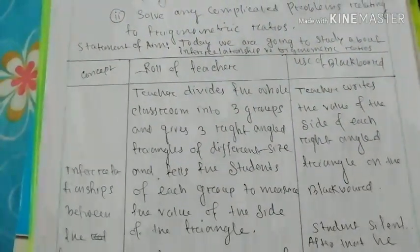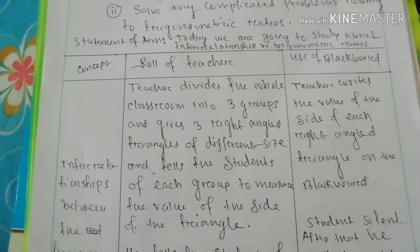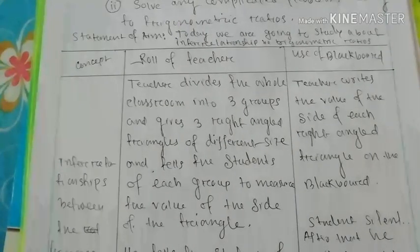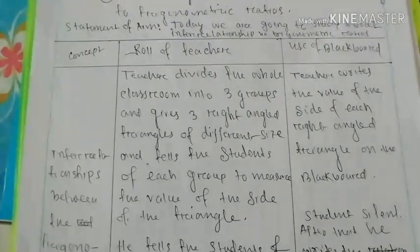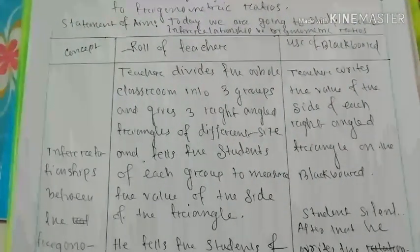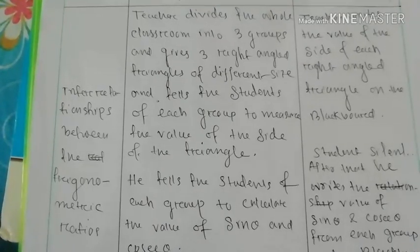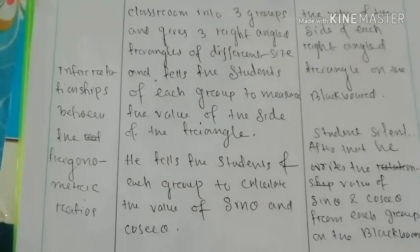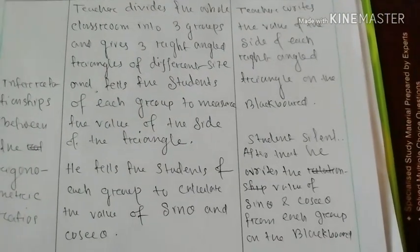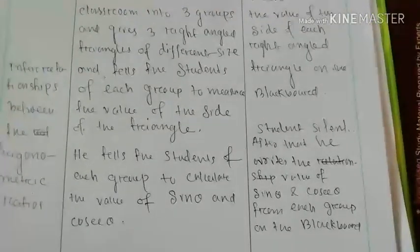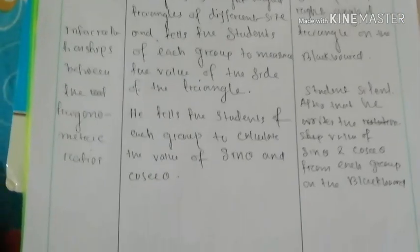The teacher divides the whole classroom into three groups and provides three right-angle triangles of different sizes, telling each group to measure the value and sides of their triangle. Use of log board: the teacher writes the values of the sides of each right-angle triangle on the log board. The teacher then tells each student group to calculate the value of sin theta and cos theta. The student is silent. After that, the teacher writes the values of sin theta and cos theta from each group on the log board.